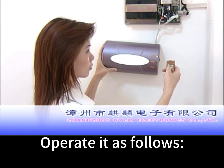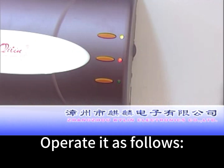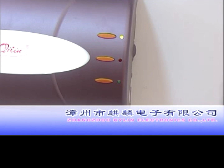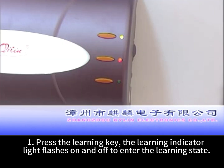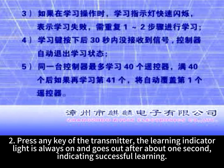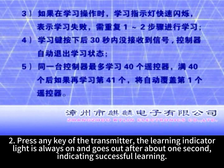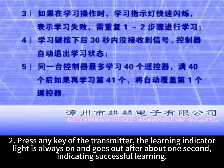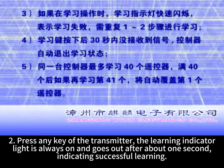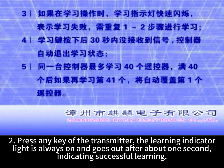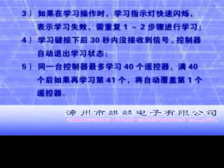Operate it as follows. One: press the learning key — the learning indicator light flashes on and off to enter the learning state. Two: press any key of the transmitter — the learning indicator light stays on and goes out after about one second, indicating successful learning.